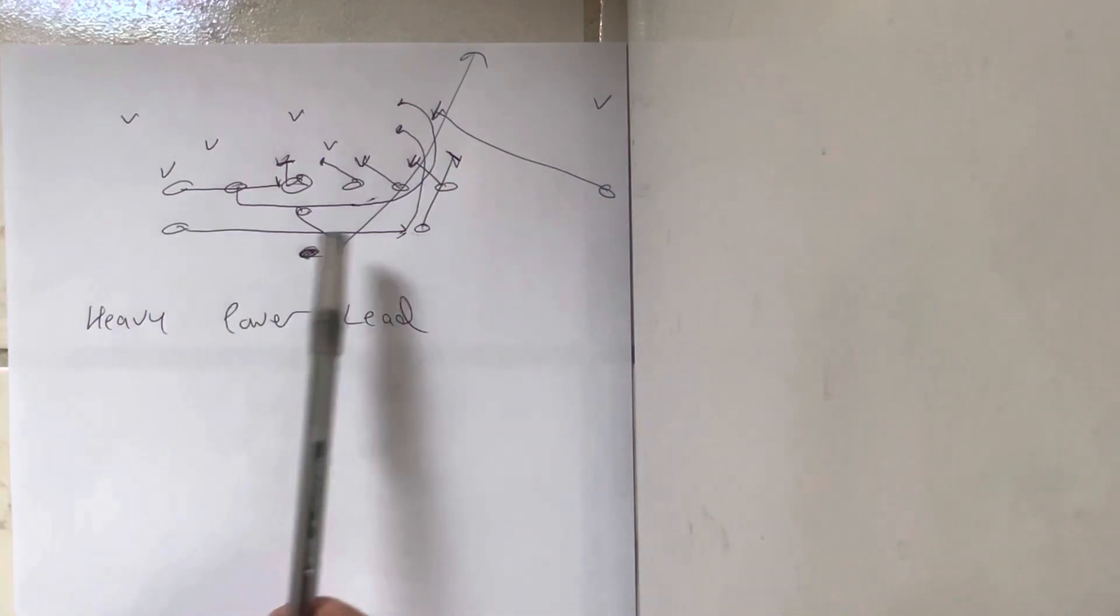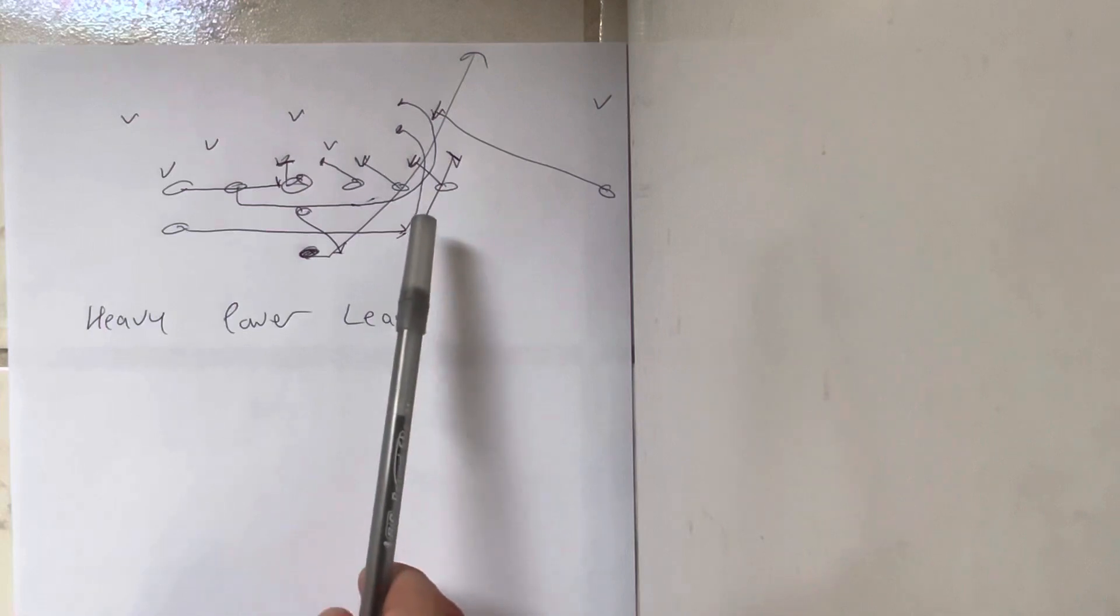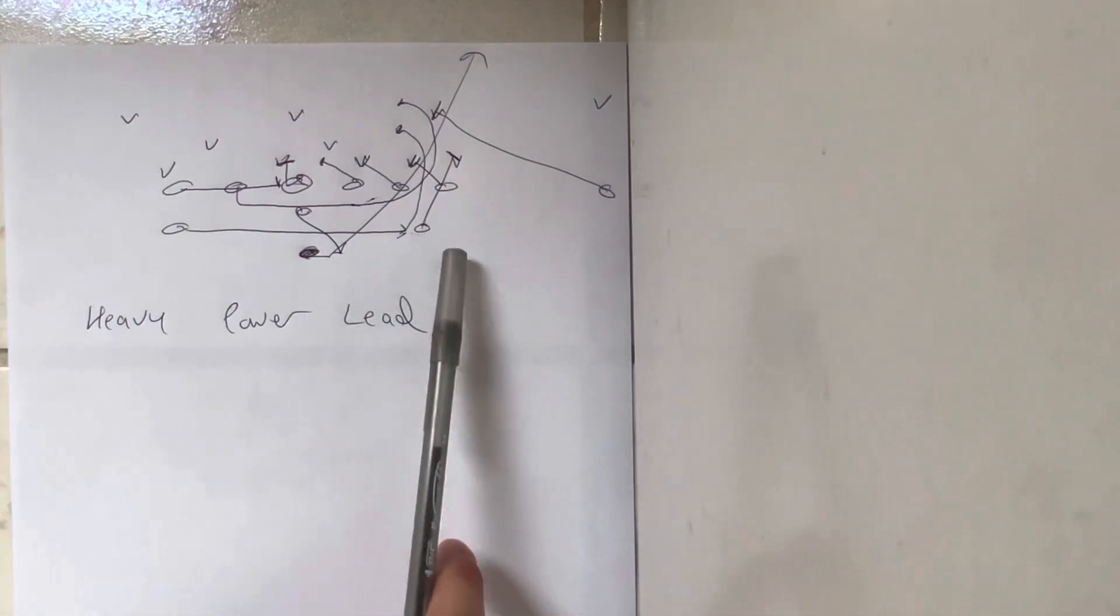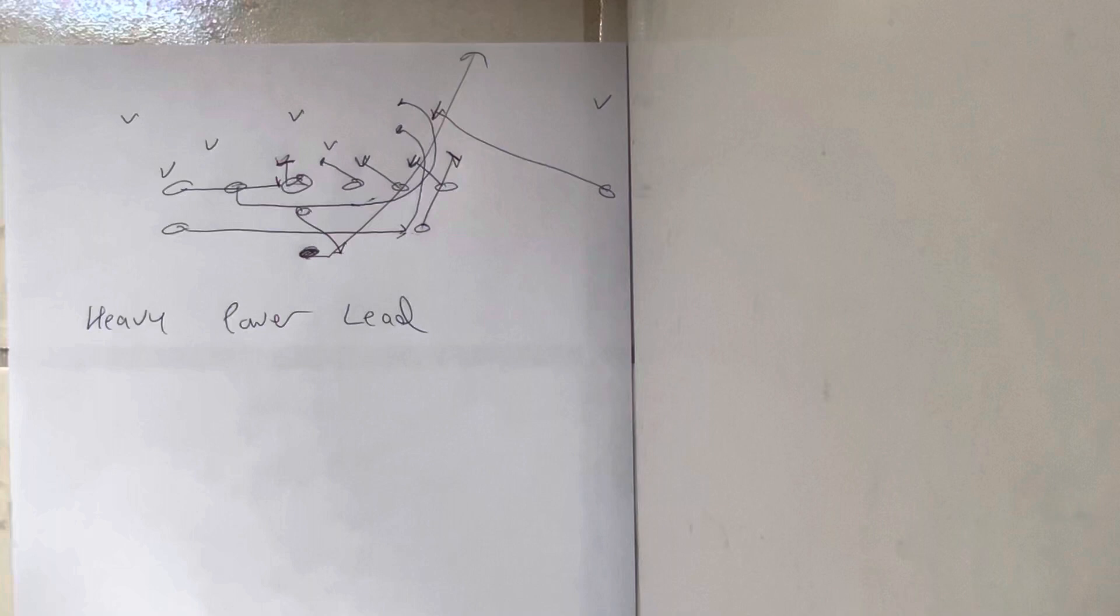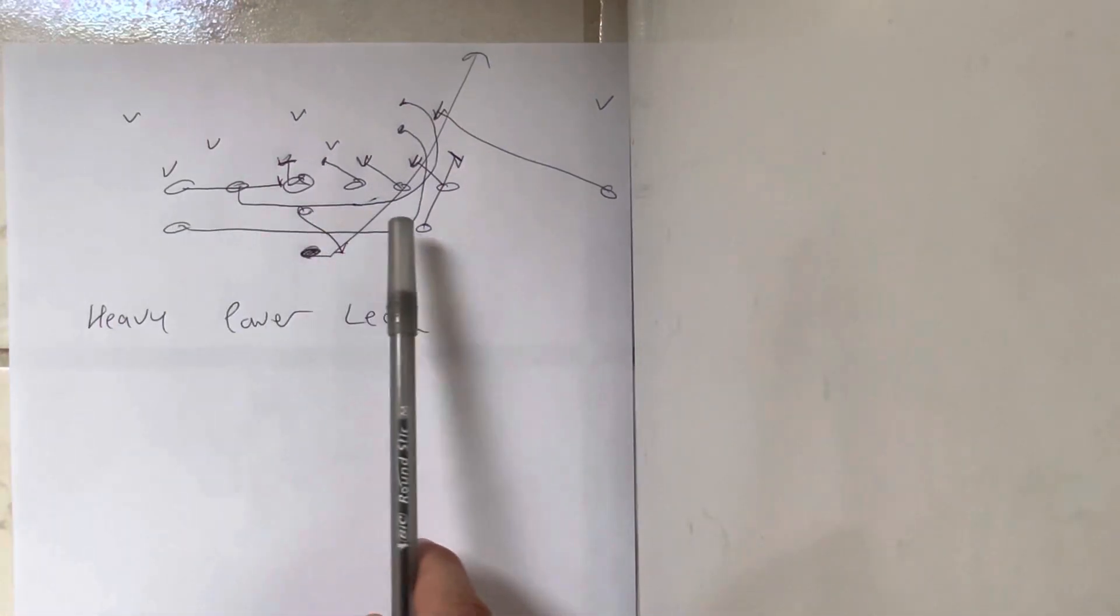What the power lead is: you're getting heavy. The playside A-back is going to move into the C-gap position. He can even be behind the heavy tackle. The cadence is down, ready, set, hot. On ready, this guy's going to run across as fast as he can. He's going to stop, and then the magic happens from there.